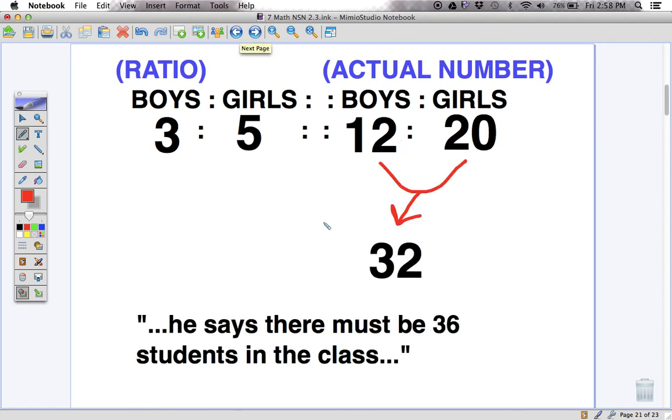So we go back to the original question. He says there must be 36 students in the class and now we know for sure. We were told at the very beginning that there are 12 boys in the class and we now know that there are 20 girls in the class. 12 plus 20 is equal to 32. So he is wrong.